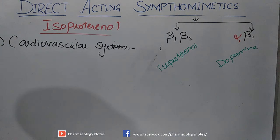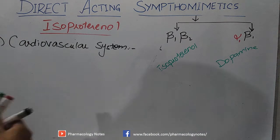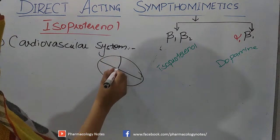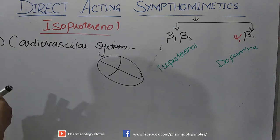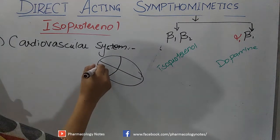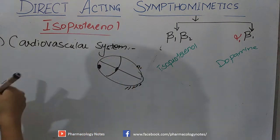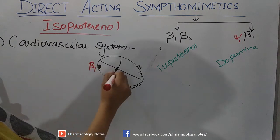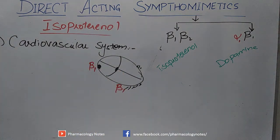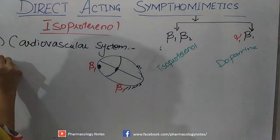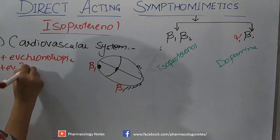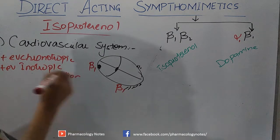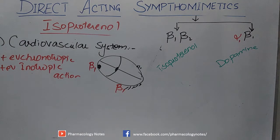Isoproterenol produces intense stimulation of the heart — it increases heart rate and the force of contraction. Increased force of contraction means increased stroke volume. The heart has the SA node, AV node, and myocardium containing adrenergic Beta-1 receptors. Acting on Beta-1 receptors, isoproterenol causes positive chronotropic and positive inotropic action.